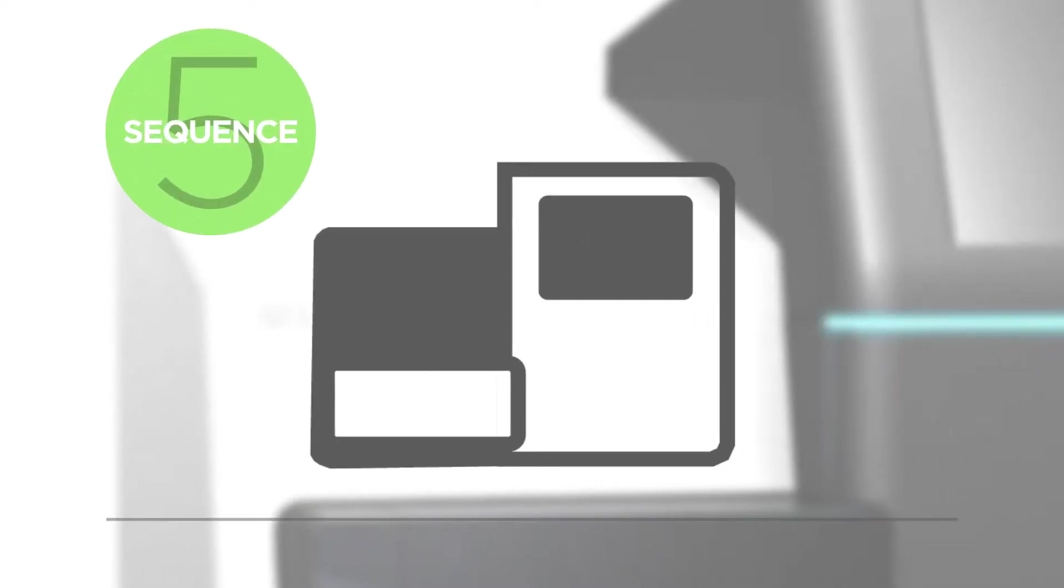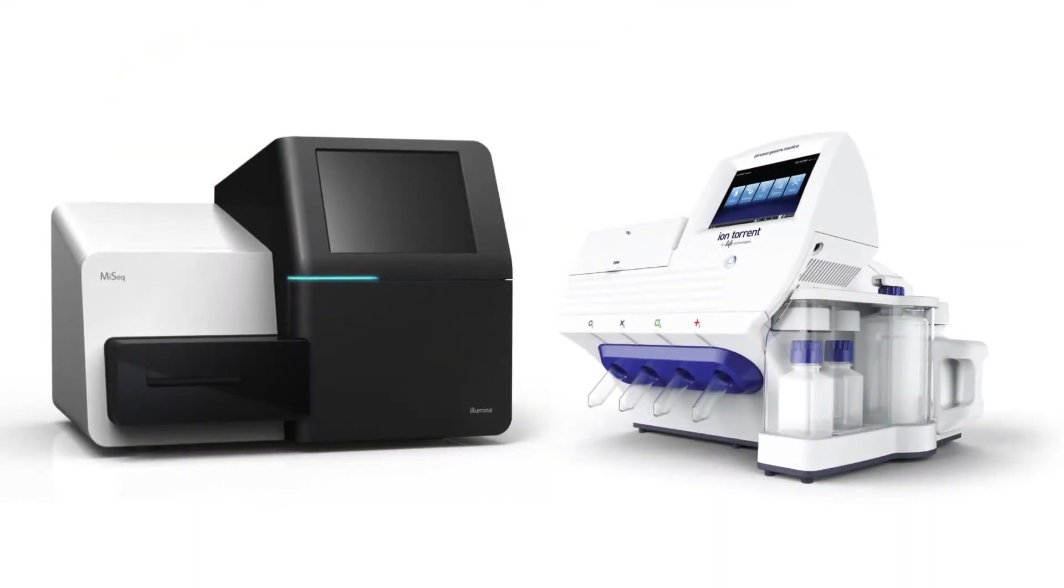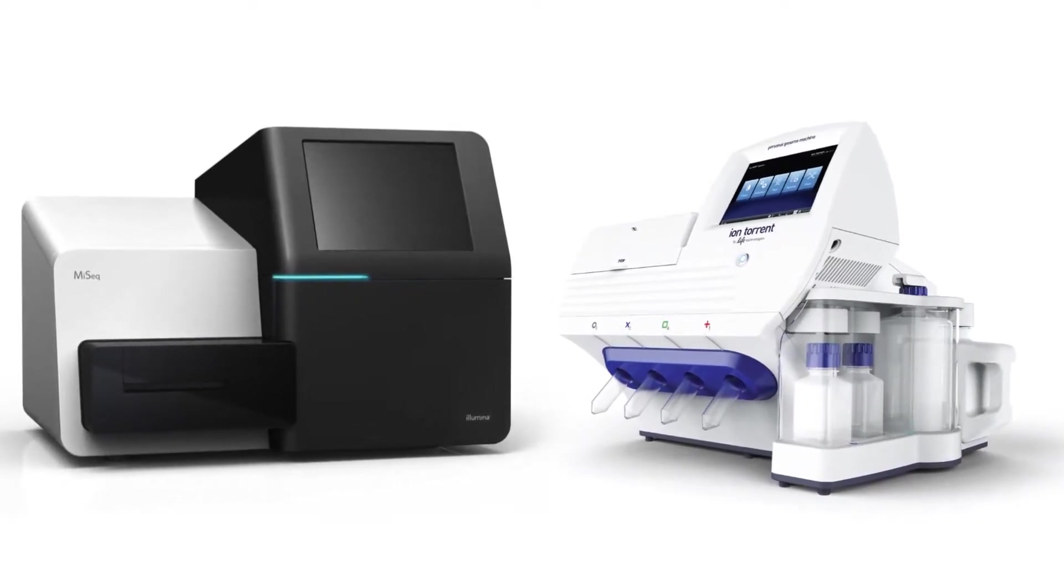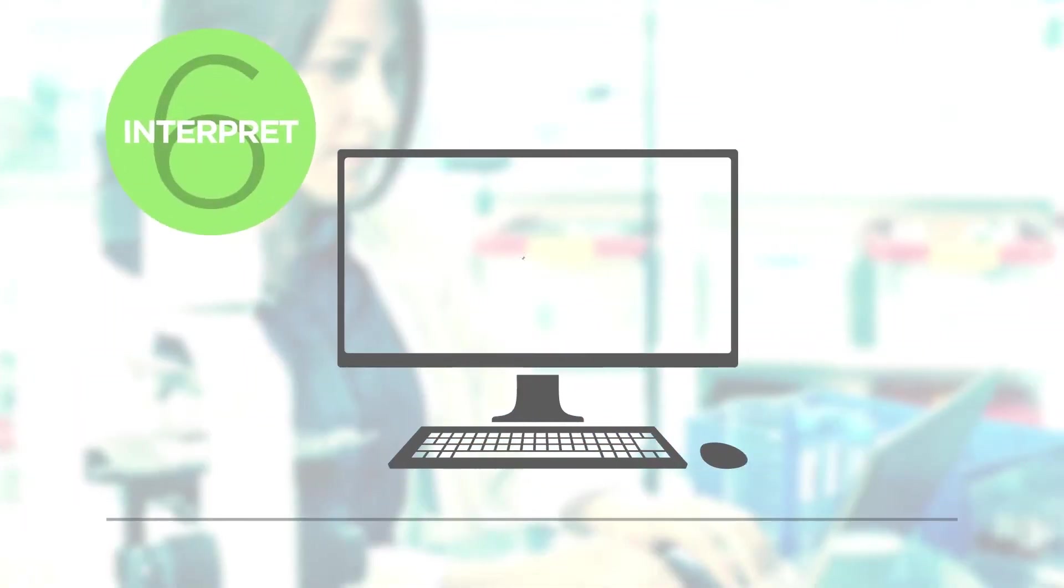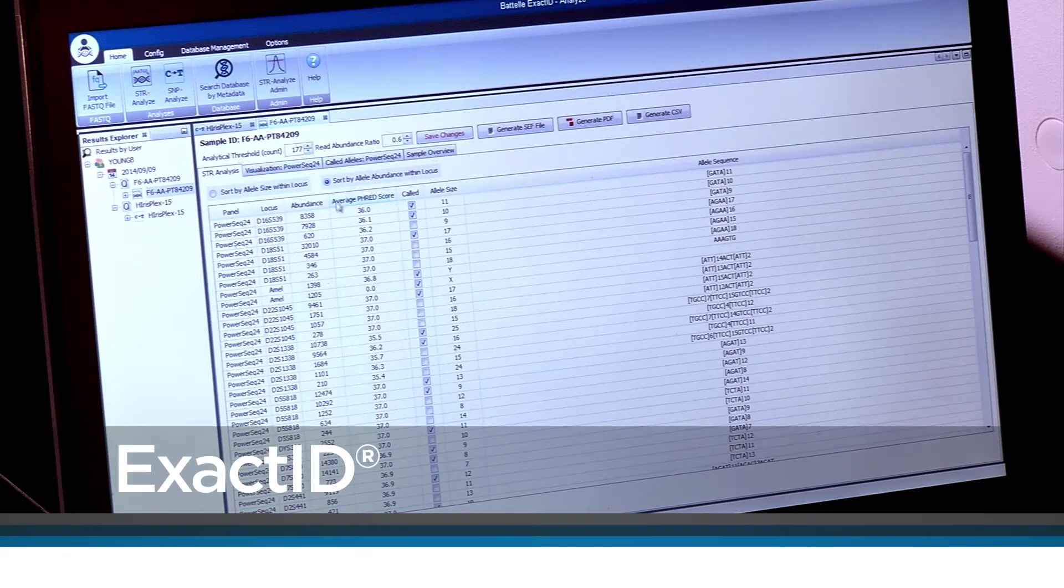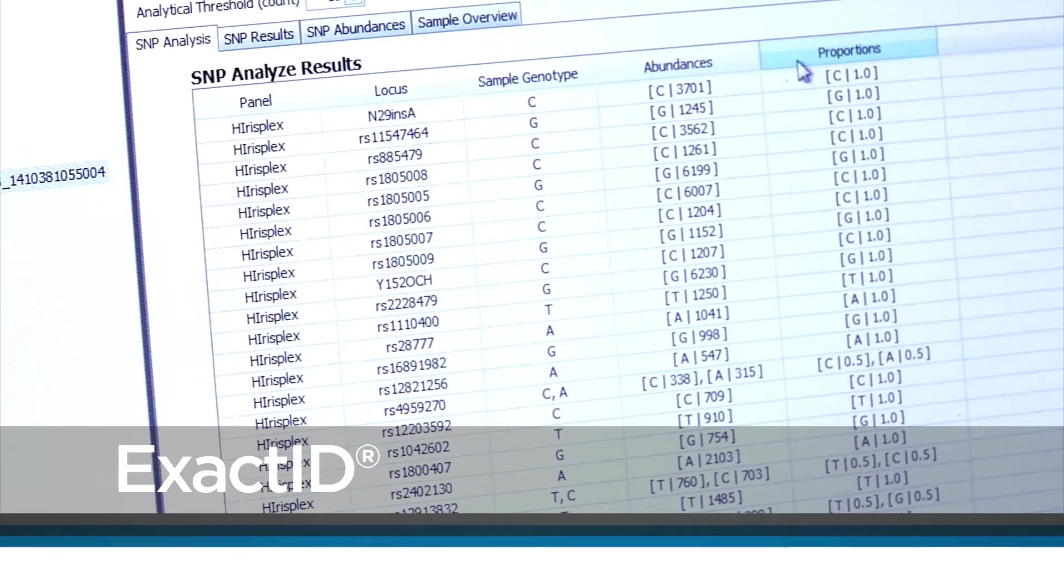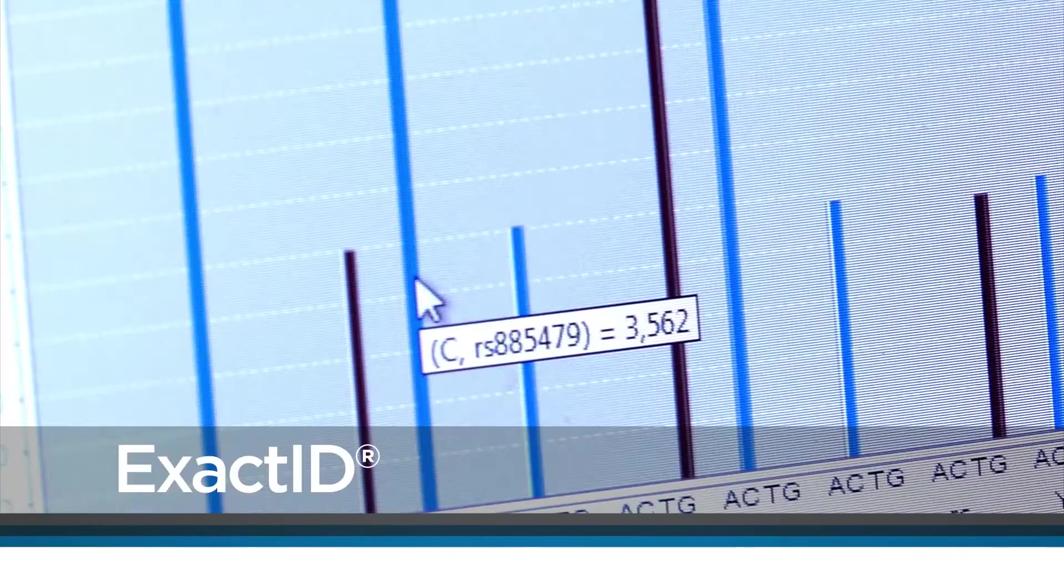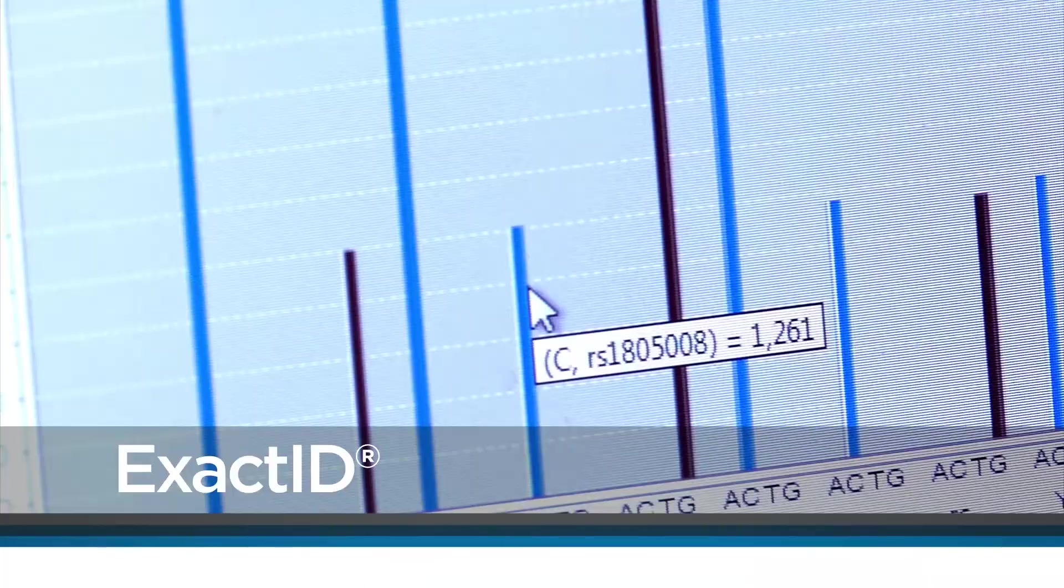The samples are then sequenced with next generation sequencing instruments that generate a significant amount of DNA data ready for interpretation. However, lacking the right analytical tool to accurately interpret the data, the DNA sequences produced cannot be used to their full potential. Developed by Battelle, ExactID is a unique sequence analysis software developed especially for the laboratory analysts who work with DNA sequencing information every day.